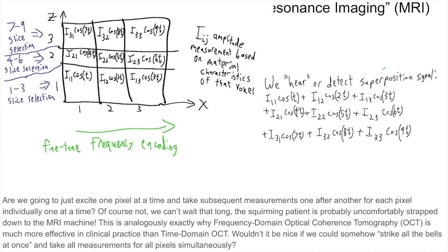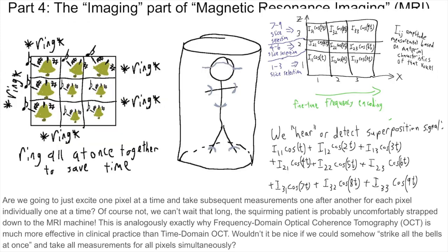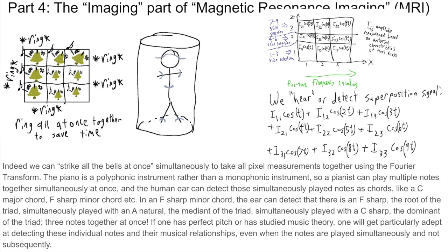Are we going to just excite one pixel at a time, and take subsequent measurements one after another for each pixel individually? Of course not — we can't wait that long; the squirming patient is probably uncomfortably strapped down to the MRI machine. This is analogously exactly why frequency domain optical coherence tomography OCT is much more effective in clinical practice than time domain OCT. Wouldn't it be nice if we could somehow strike all the bells at once, so to say, and take all measurements for all pixels simultaneously altogether? Indeed, we can strike all the bells at once simultaneously to take all pixel measurements together using the Fourier transform.